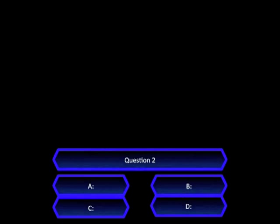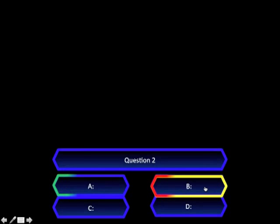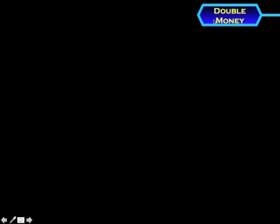Then question 2 appears. I'm going to answer B — it was not right, it was A. I'm having bad luck today. I'll hit next a few times, and as you can see up here, it is the double money question.